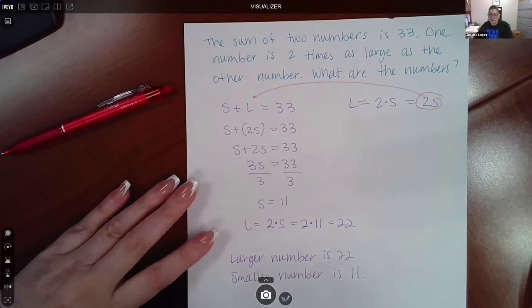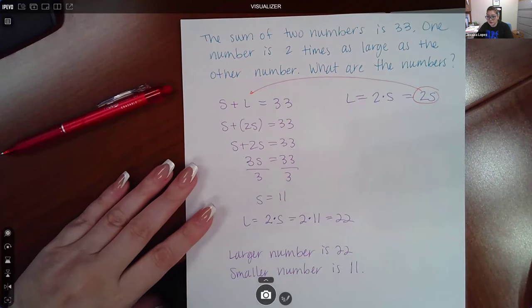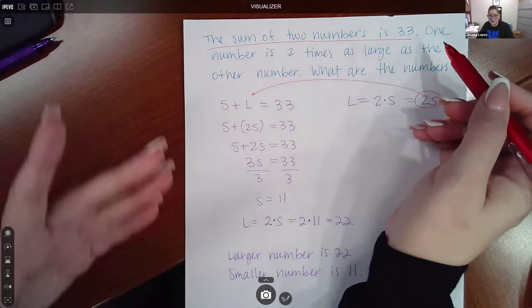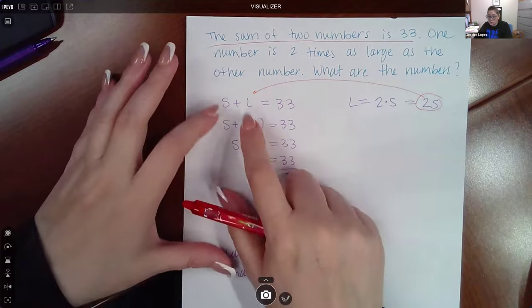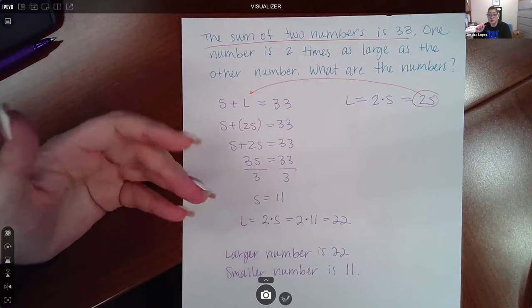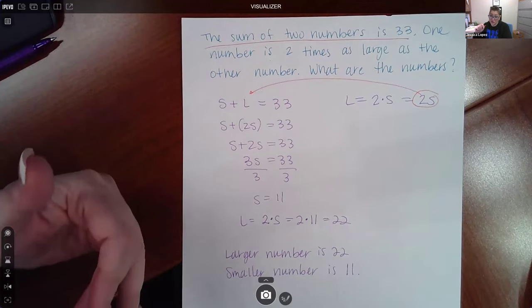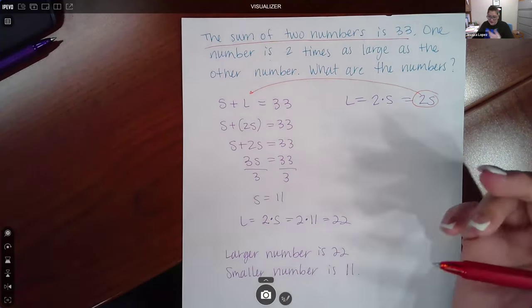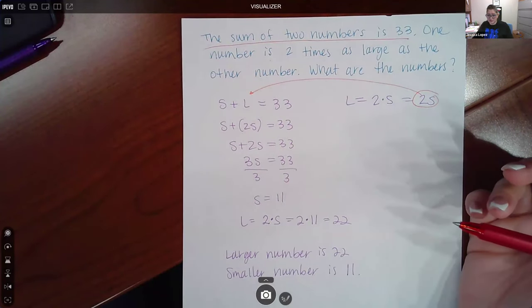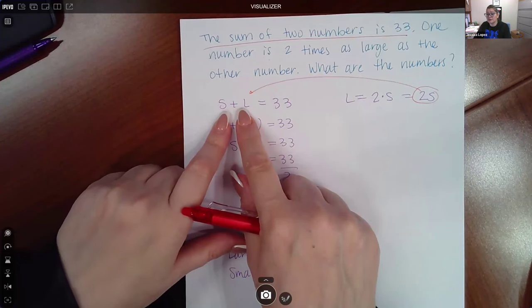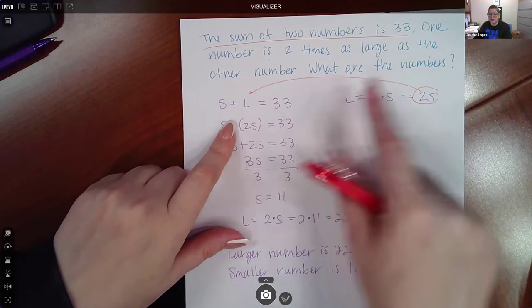Here we have the sum of two numbers is 33. That's going to give us our first sentence. I'm going to add two numbers together. I didn't know what letters to use just yet. But when I read the second sentence, it says one number is two times as large as the other number. So we obviously have a smaller number and a bigger number. So I used S and L again, just like the previous example, where S is the smaller number and L is the larger number. From that first sentence, if we add them together, we get 33.